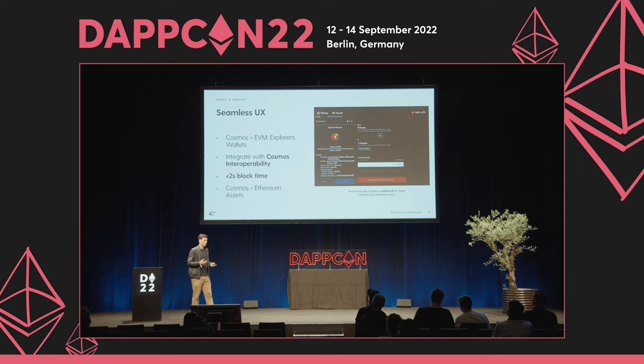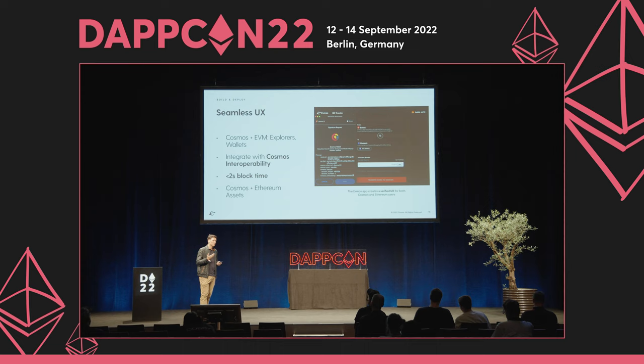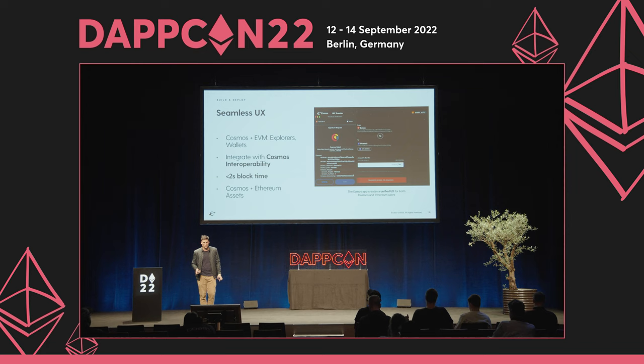In terms of user experience, we also integrated EIP-712 so that users from the Ethereum ecosystem don't have to change their user experience by using a new wallet. Now you can even send IBC transactions to other Cosmos chains by leveraging MetaMask and EIP-712 meta-transactions. You can integrate seamlessly with Cosmos via interoperability, and we also offer a block time of less than two seconds — last time I checked it was 1.8 seconds — providing a better user experience for end users interacting with your applications.